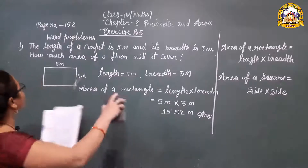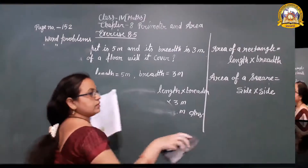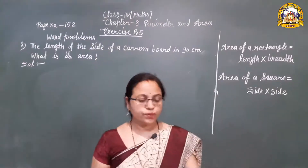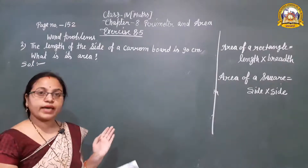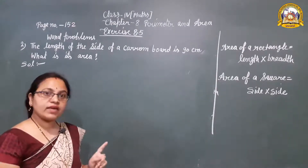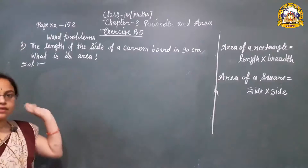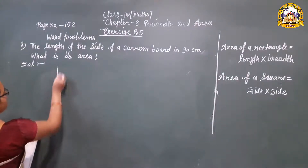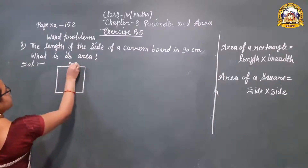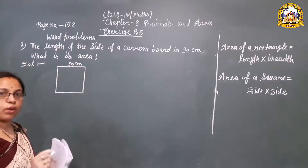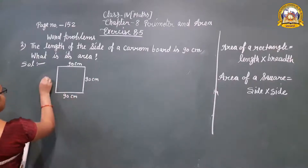Next, question number 2. The length of the side of a carom board is 90 centimeters. A carom board is in square shape, that is why only one side is given — 90 centimeters. The specialty of the square is that all sides are equal, so all sides are 90 centimeters.